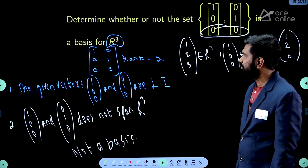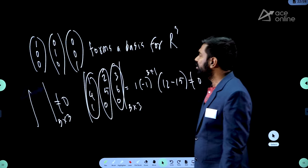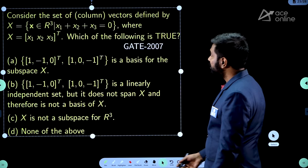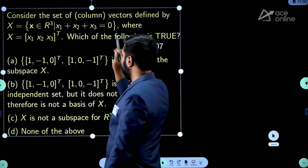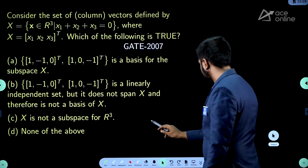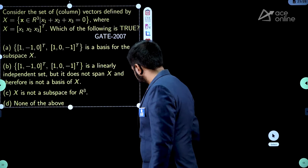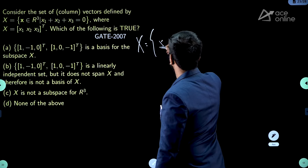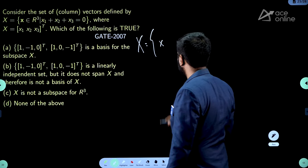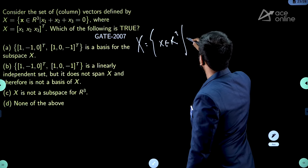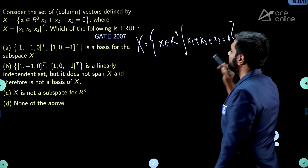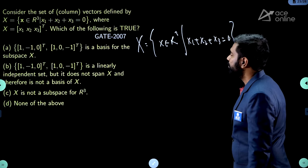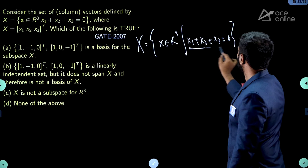The options given are: (A) the two vectors form a basis for the subspace x, (B) the two vectors are linearly independent but do not span x, (C) x is not a subspace of R³, (D) none of the above. We can immediately eliminate option C because x₁ + x₂ + x₃ = 0 is a homogeneous system — it resembles Ax = 0 with coefficient matrix [1,1,1]. Solutions of a homogeneous system always form a subspace.